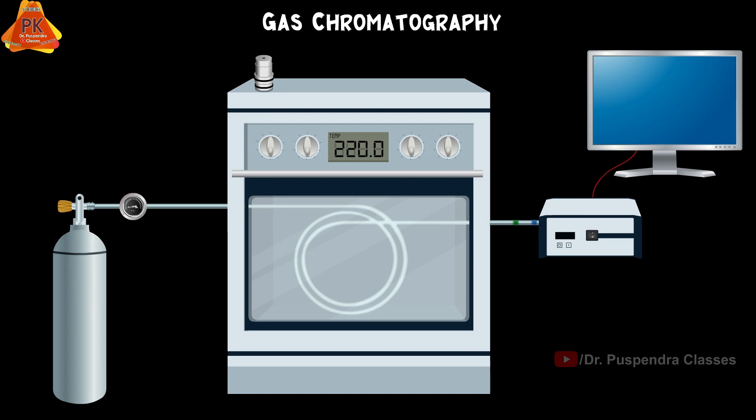Ultimately, eluted molecules will reach the detector. Finally, the chromatogram will be visible in the recorder according to the intensity and retention time of the compounds.